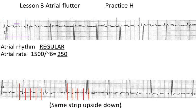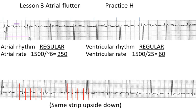The ventricular rate is very regular also in this strip, varying about 25 little boxes between QRSs. That gives us a nice regular rhythm of 60 beats per minute. And if you notice, if you took 60 times roughly four, you'd get approximately 250 — 240 exactly. So you see there's a relationship here.